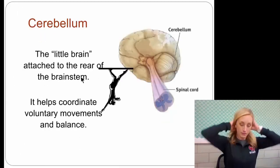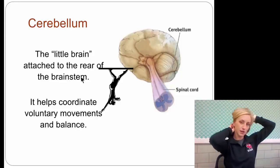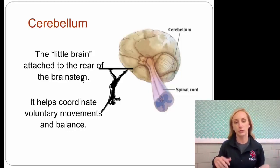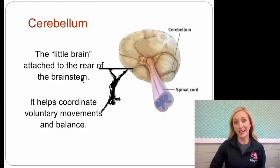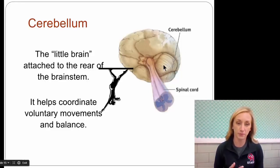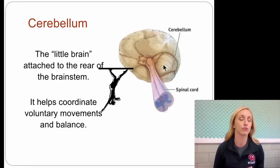The cerebellum is kind of at the base of your hairline down here. These are called the 'little brains' — we have two of them, we have two of everything in our brain. It looks like a little brain: all smushy and wrinkly. It's at the rear of the brain stem. It helps coordinate voluntary movements and balance, so gymnasts and athletes have a really strong cerebellum.